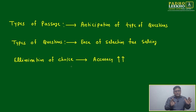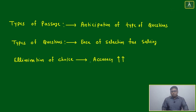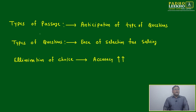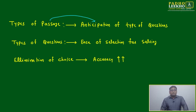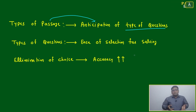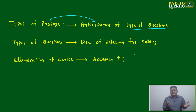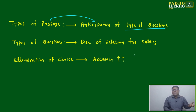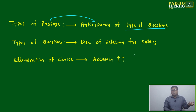Types of passages: once you understand the two types of passages, anticipation of the type of questions becomes easy. If it is a science and technology RC passage, of course database questions will be more. If it is a philosophical passage, of course inference-based questions will be more — because philosophy itself builds things in the air, so questions must also be in the air. Therefore inference questions must be there. Types of questions follow from types of passages.